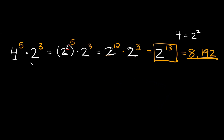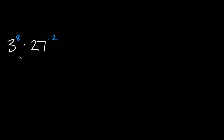Let's try a few more examples. Here's our next example: three to the eighth power times 27 to the negative second power. Again, the goal is to either get the same base or get the same exponents. If you notice, 27 can be rewritten as three cubed, which gives us the same base — a three and a three. So let's rewrite 27 as three cubed.